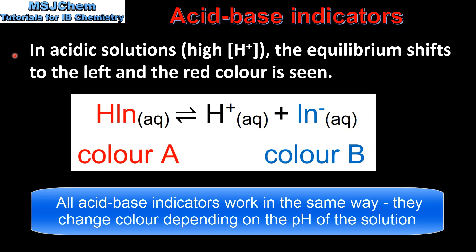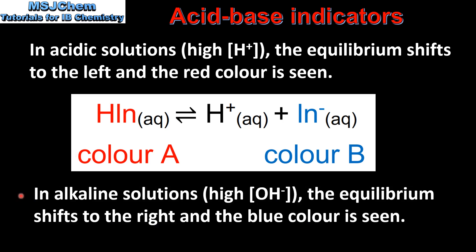Next we look at why litmus paper changes color in acidic and alkaline solutions. In acidic solutions which have a high concentration of hydronium ions, the equilibrium shifts to the left and the red color is seen. In alkaline solutions which have a high concentration of hydroxide ions, the equilibrium shifts to the right and the blue color is seen. So in solutions with low concentrations of hydronium ions, the equilibrium shifts to the right and litmus appears a blue color.